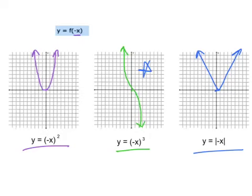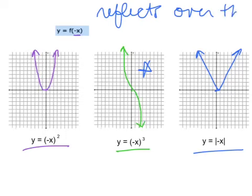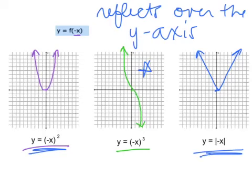So if it's inside our function, it reflects over the y-axis. And so with our two n-graphs, the quadratic and the absolute value, you don't really notice that reflection, but it is there.